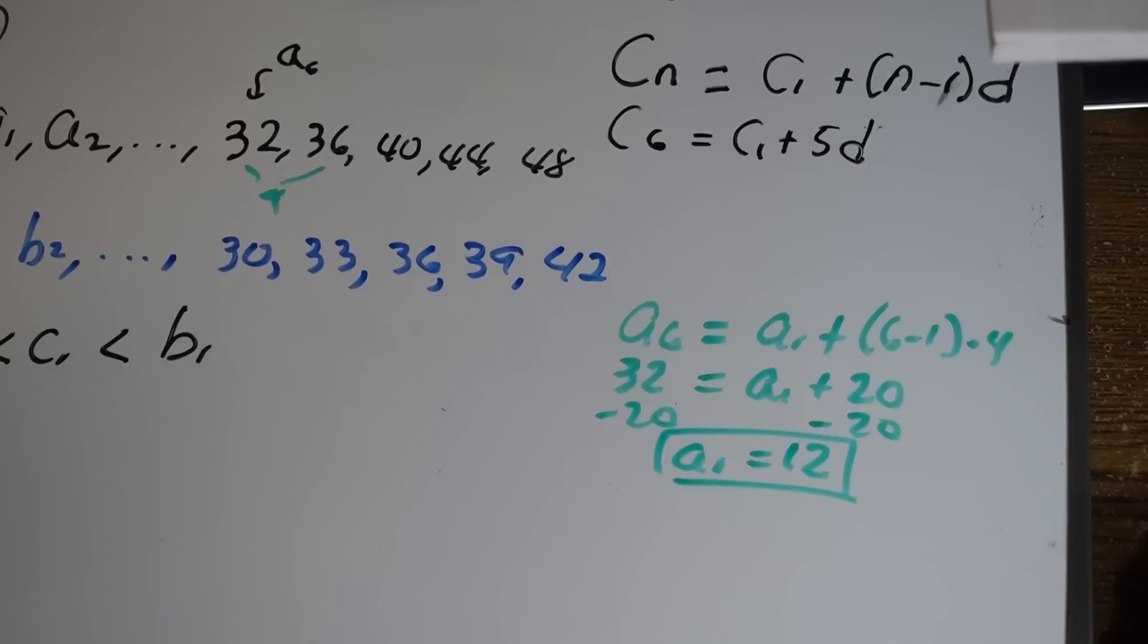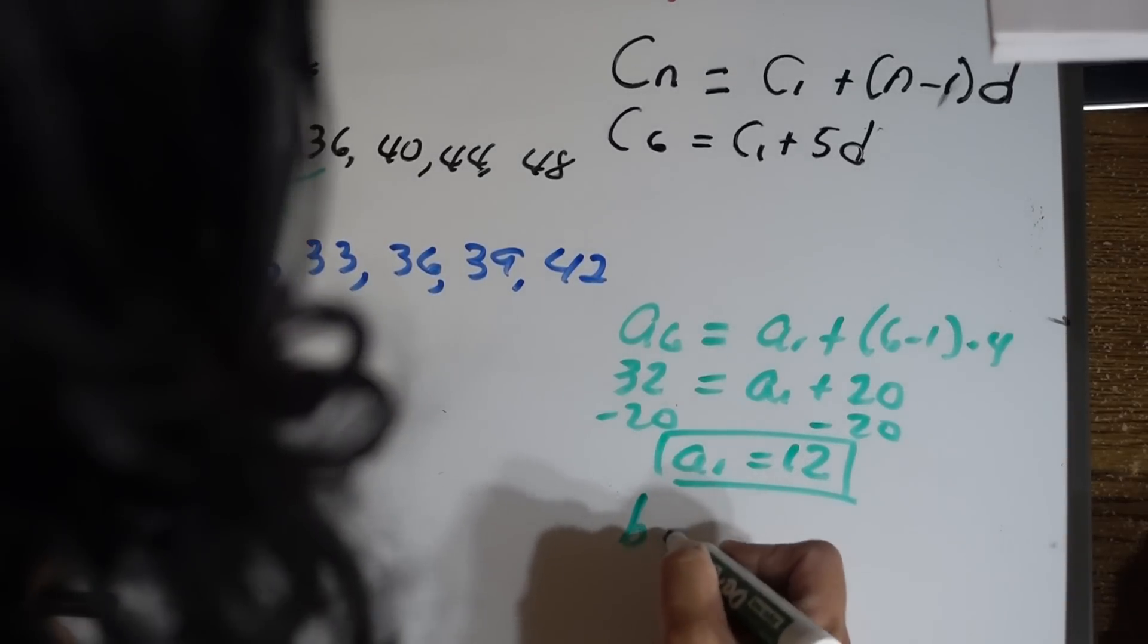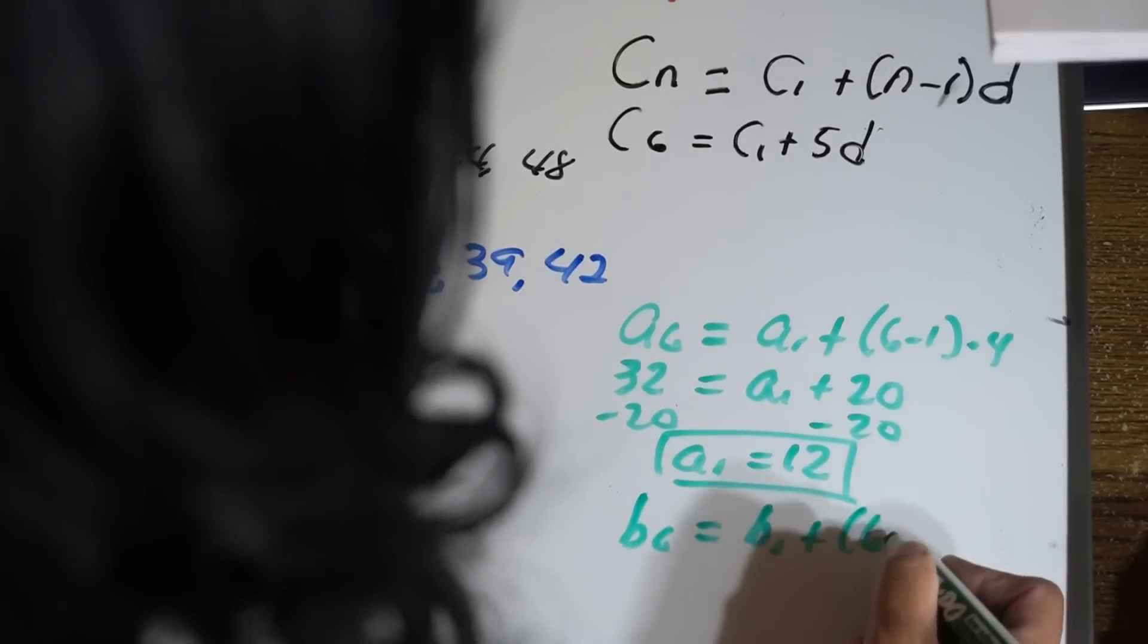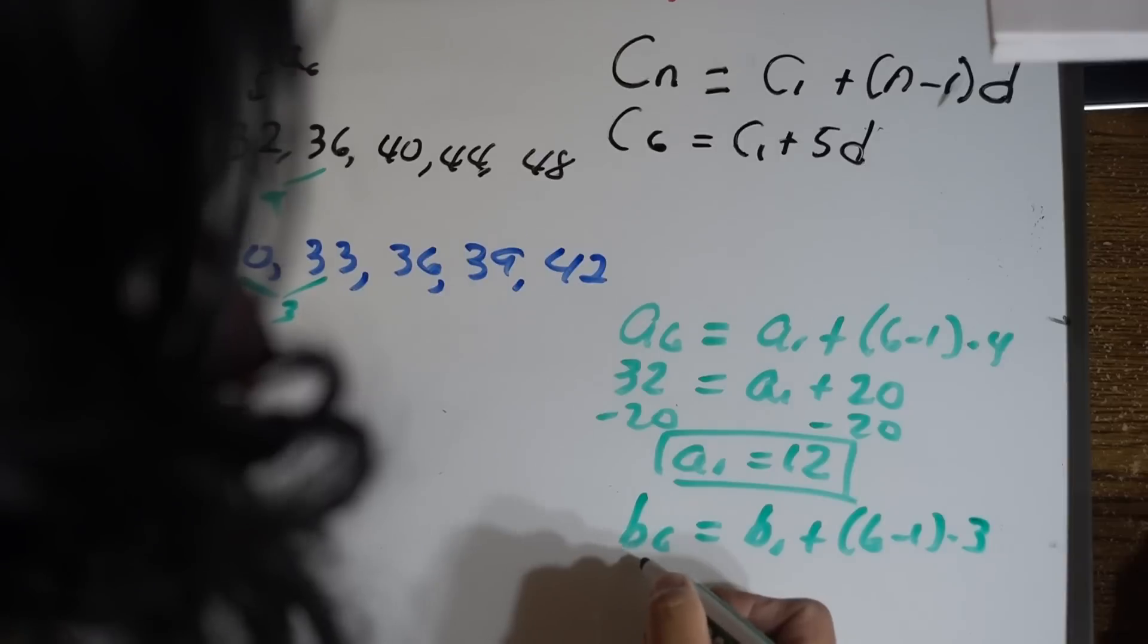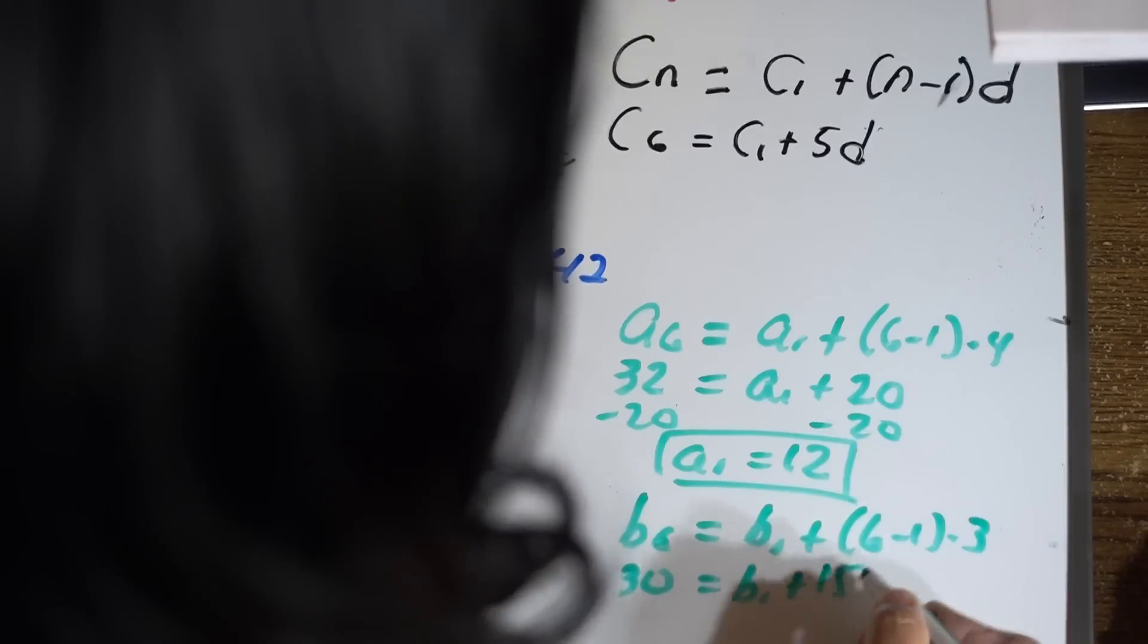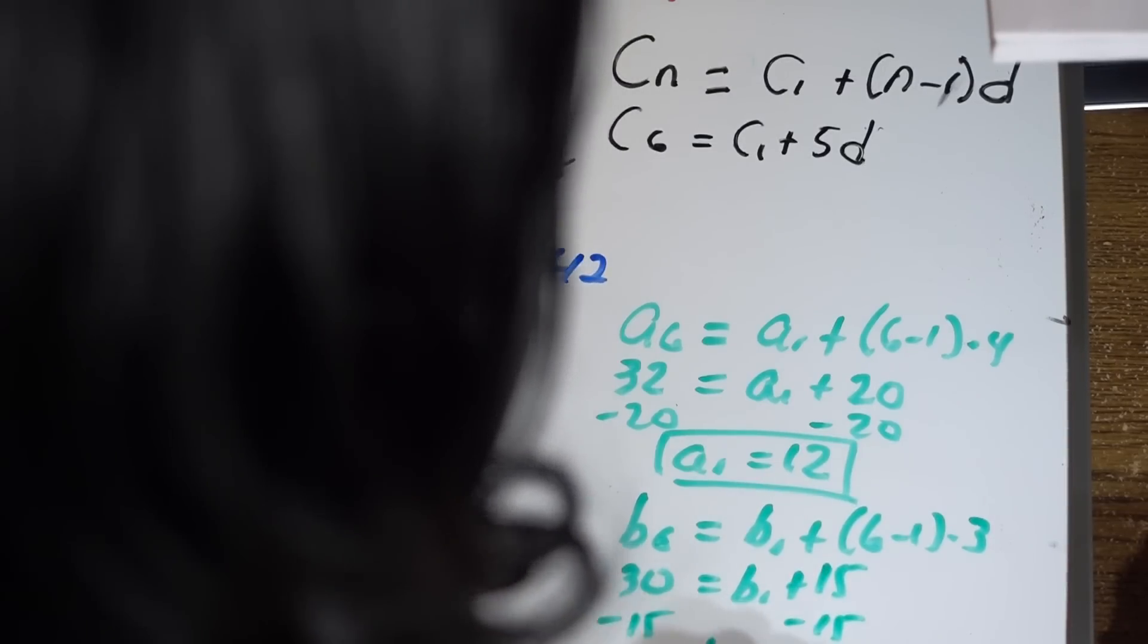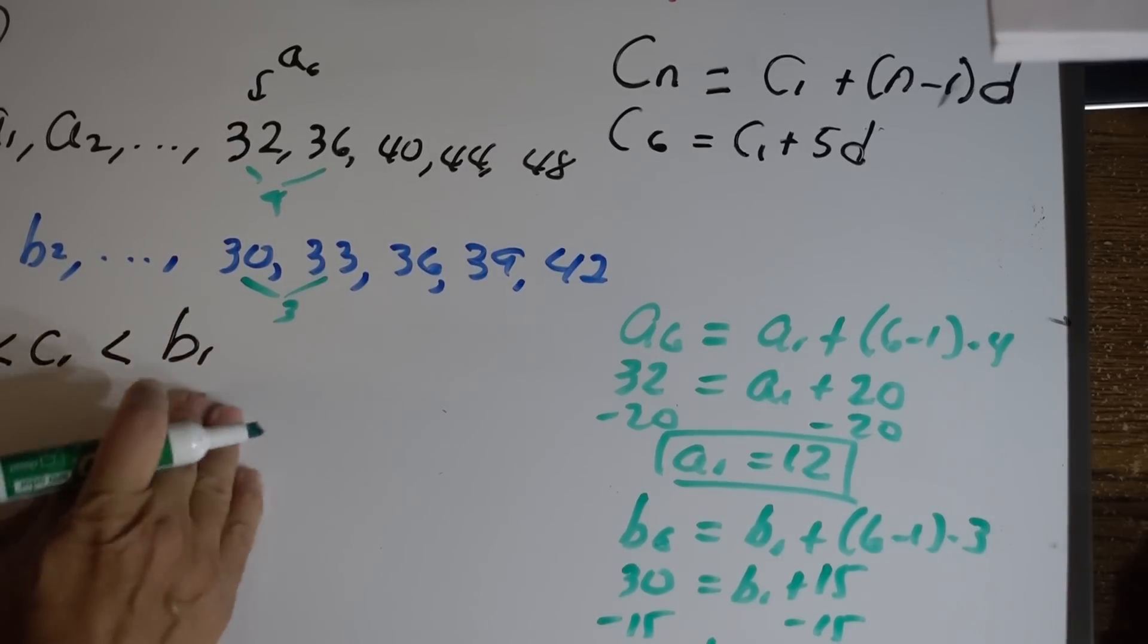Let's use the same formula to find b_6. So b_6 is going to be b_1 plus 6 minus 1 times, in this case the difference you notice is 3, so times 3. So b_6 which is 30 is b_1 that we're looking for plus 5 times 3 is 15. Subtract 15 from both parts and we know that b_1 is 15.